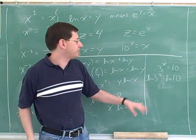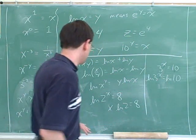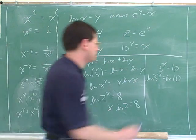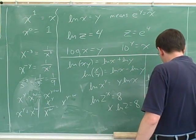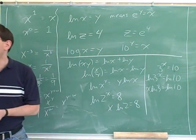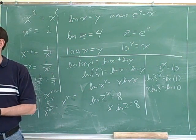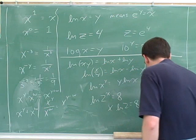And now we can go on to the step that you already mentioned. Now we bring the x down using this rule down here. So this becomes x times log 3 equals log 10. And now we're home free, and we can solve this like a normal equation by dividing both sides by log 3.